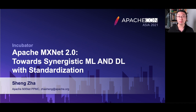A bit more about myself: I'm a senior applied scientist at Amazon AI, and I'm also a PPMC member of Apache MXNet. I was a steering committee member of ONNX, which is a deep learning model exchange standard, and I participate in the Consortium for Python API standards on behalf of these two projects.